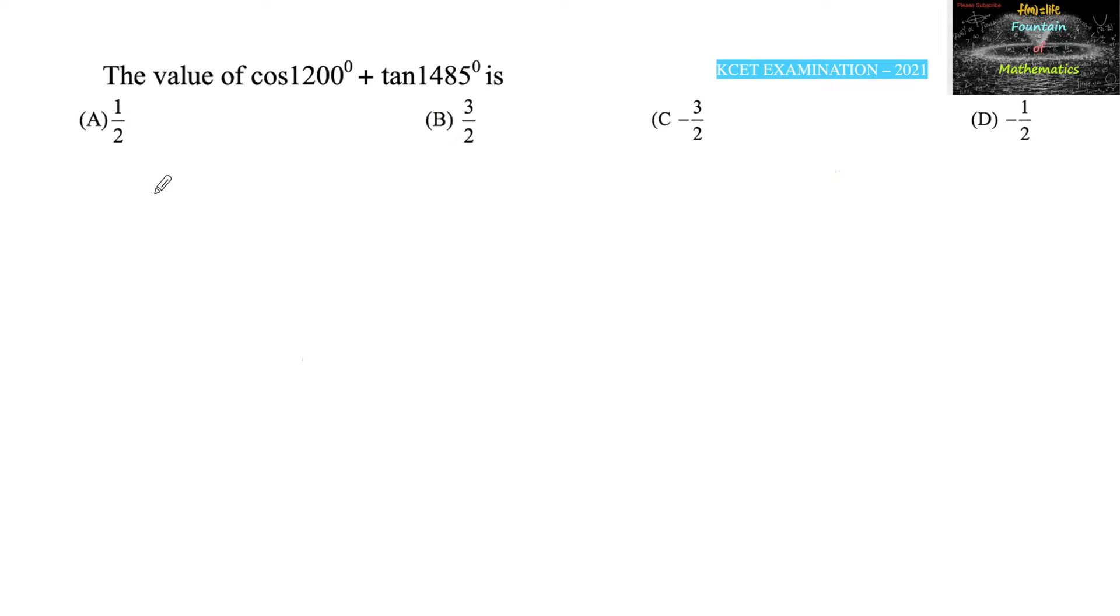The value of cos 1200 degrees plus tan 1485 degrees. Cos 1200 degrees we can write it as cos 3 times 360 degrees, that is 1080, plus 120 degrees, which is equal to cos 120 degrees.